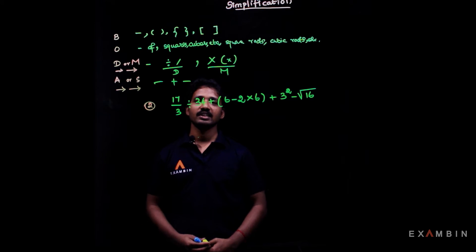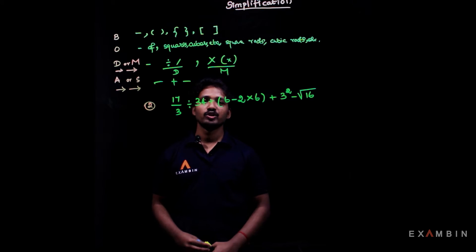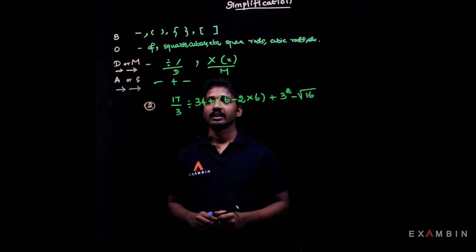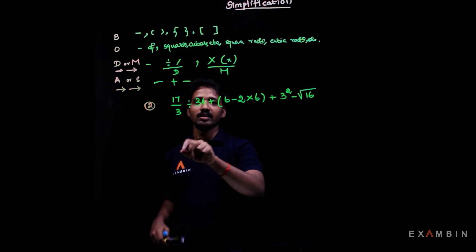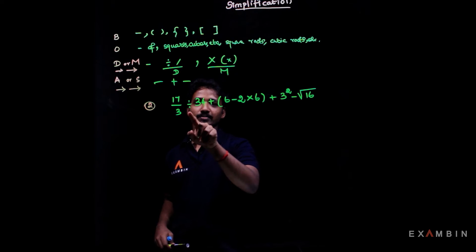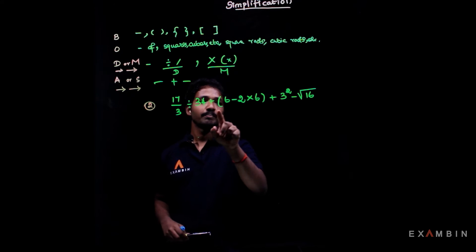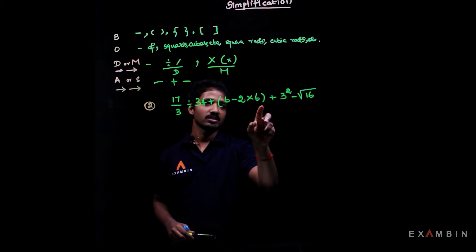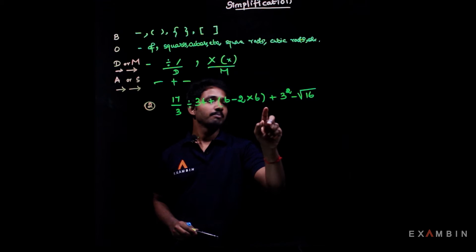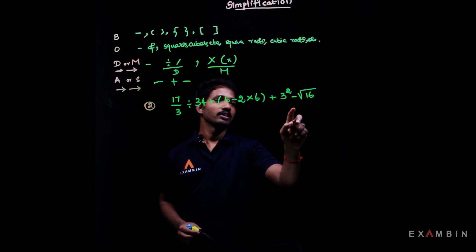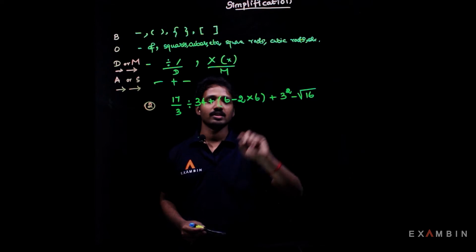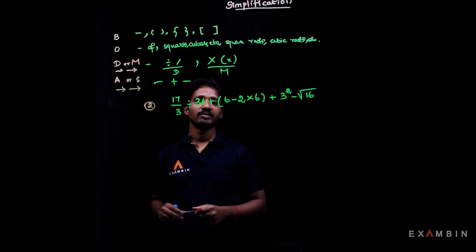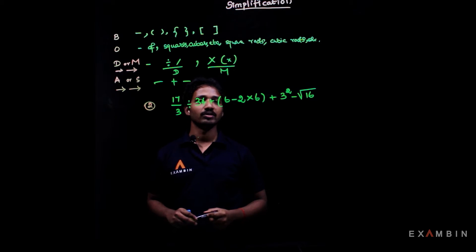Let's look at another example to understand more about the BODMAS rule. Here we have: 17 divided by 3, divided by 34, plus bracket of (6 minus 2 into 6), plus 3 squared, minus square root of 16. As per the BODMAS rule, we will try to solve this step by step.